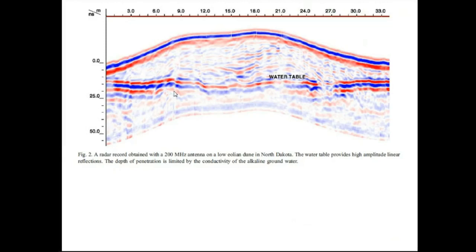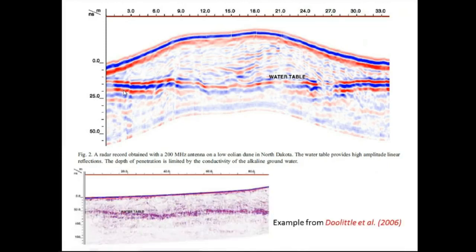It basically depends on the expertise and experience of the interpreter - how good your skills are, how much experience you have. Without experience you cannot understand. You can see this reflection stands out from the other reflections. It is identified as a water table with three consecutive bands. Red is the positive amplitude, this is the negative amplitude, and this is the positive amplitude.